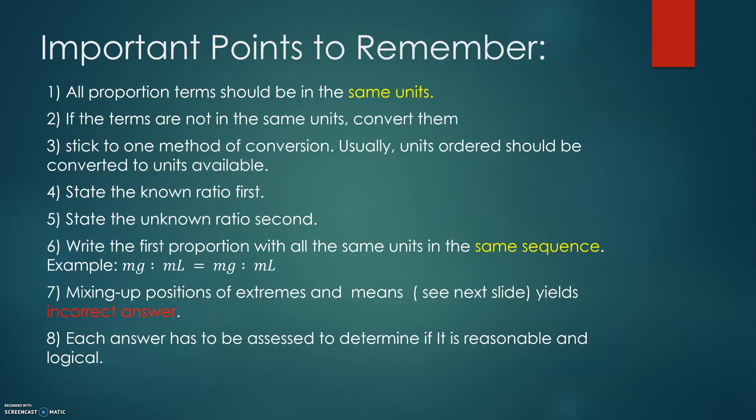We are ready to look at a couple of examples, but before starting the examples I would like to emphasize a couple of important points to remember. First of all, we need to remember that all proportions have two different quantities in the ratios. For each ratio, the quantities should be written in the same units. For example, milligram to milliliter, milligram to milliliter. If the terms are not in the same units, convert them. Use the conversion method which you like. Sometimes you can use just a shift in the decimal point. Maybe you like the method of dimensional analysis, we didn't discuss it yet, but it's a reliable method.